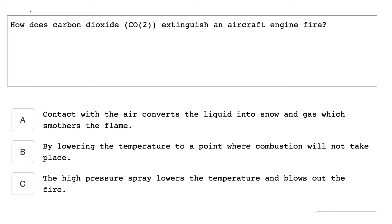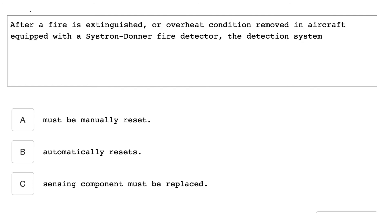How does carbon dioxide CO2 extinguish an aircraft engine fire? Contact with the air converts the liquid into snow and gas which smothers the flame. After a fire is extinguished or overheat condition removed in an aircraft equipped with a Kidde fire detector, the detection system automatically resets.